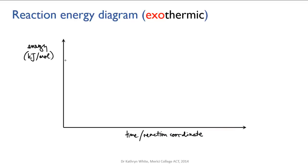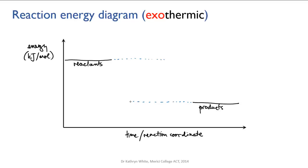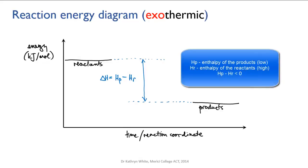For an exothermic reaction, the reactants at the beginning of the reaction have more energy than the products at the end. The difference between those two energies is delta H, the change in enthalpy. You can see this is going from a high value to a low value, so the change is a negative one — and that's what shows that it's exothermic.